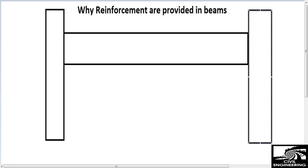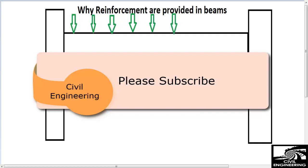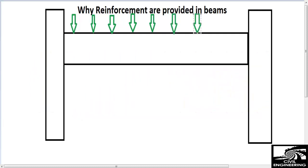Now consider the load coming on the beam. The beam is a flexural member, so transverse loadings are coming on the beam in this direction. It consists of dead load as well as live load — for a residential building it may contain the load of furniture and the load of people moving and living in the building.